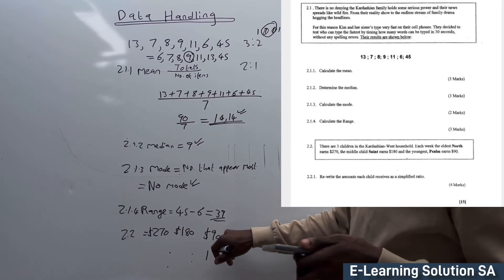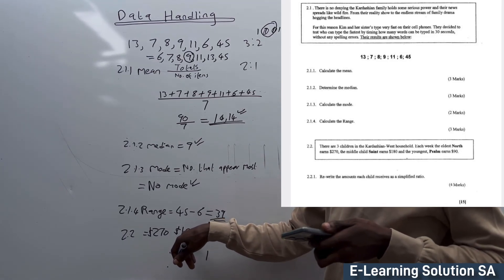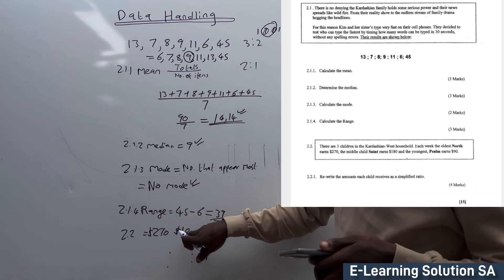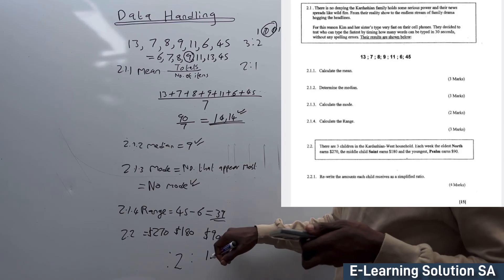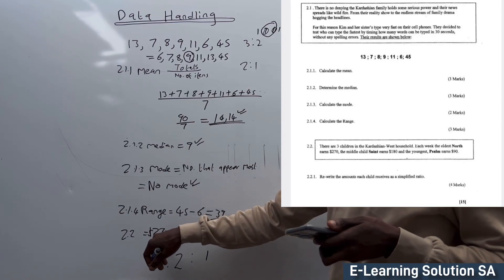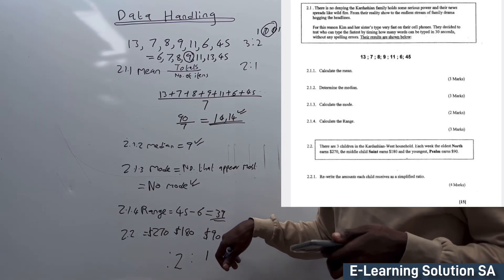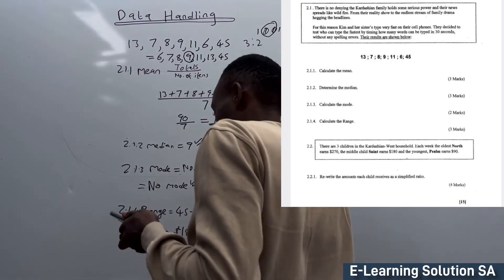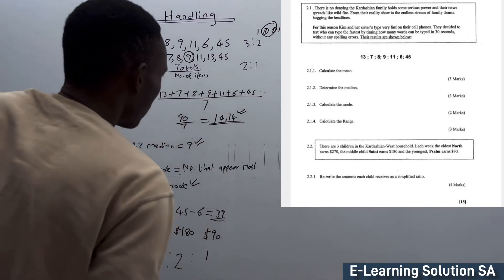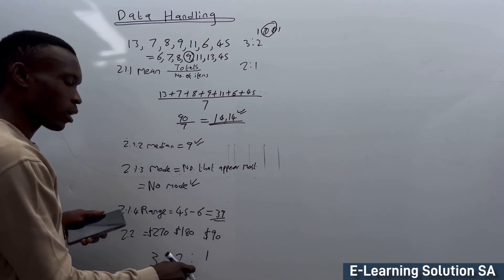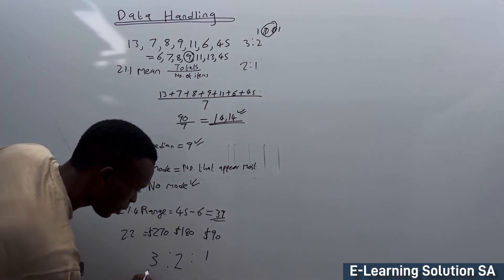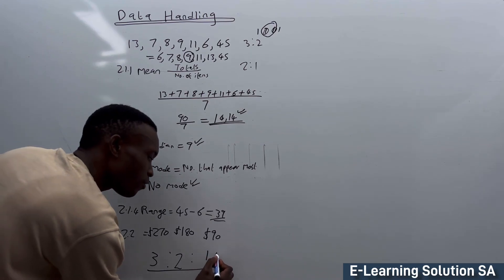180 divided by 90 gives you 2. 270 divided by 90 gives you 3. This simply means that our ratio is 3:2:1. This is the answer and it's four marks for this.